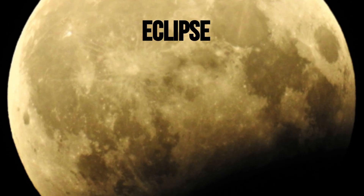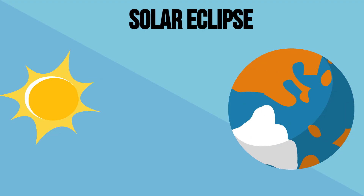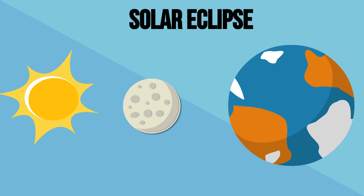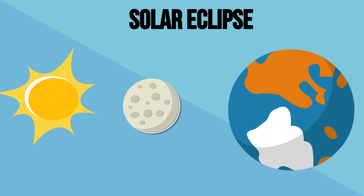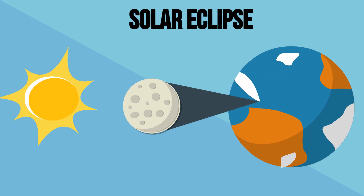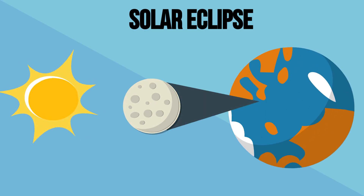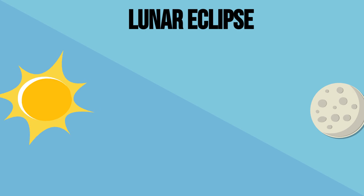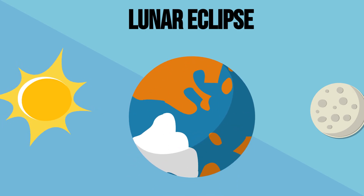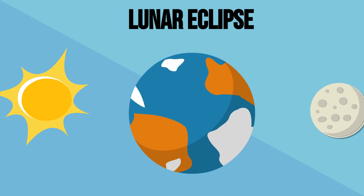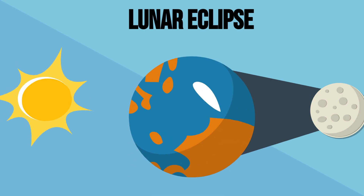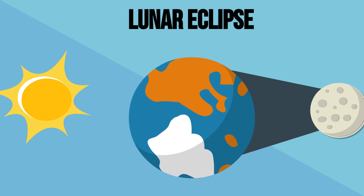A solar eclipse happens when the moon comes between the earth and the sun and the shadow of the moon falls on part of the earth. A lunar eclipse happens when the earth comes between the sun and the moon and the shadow of the earth falls on the moon.